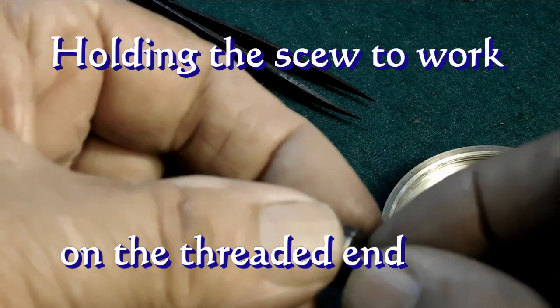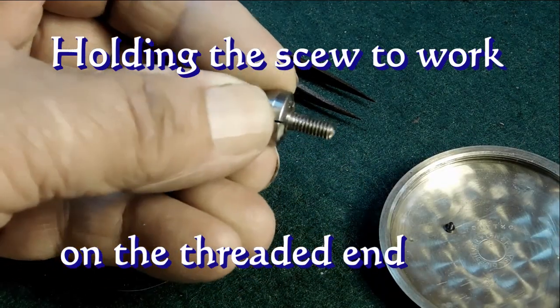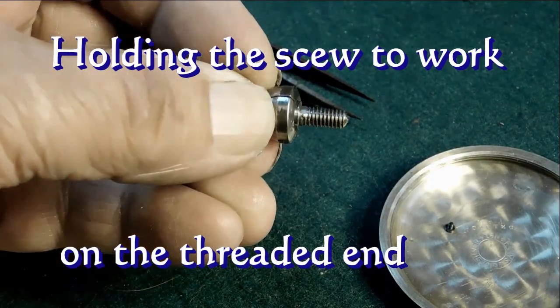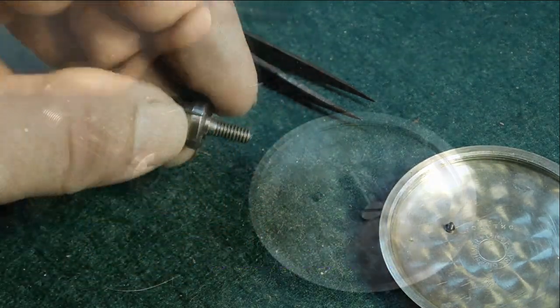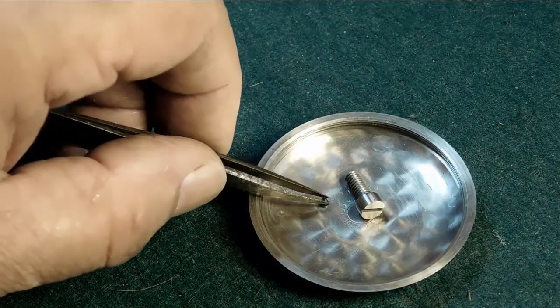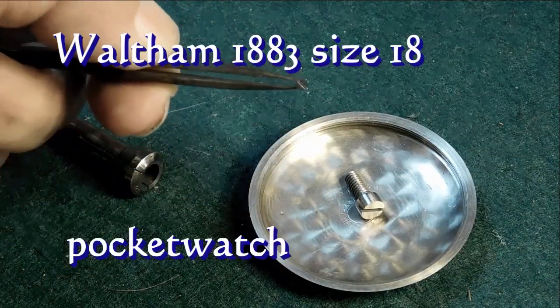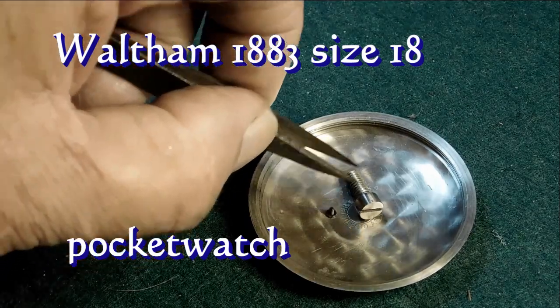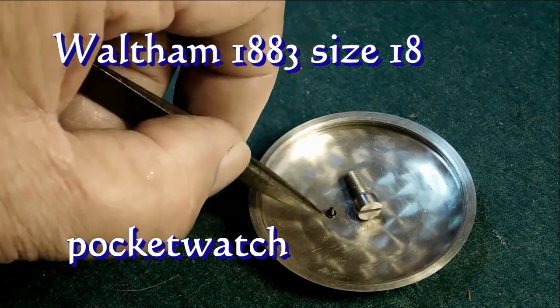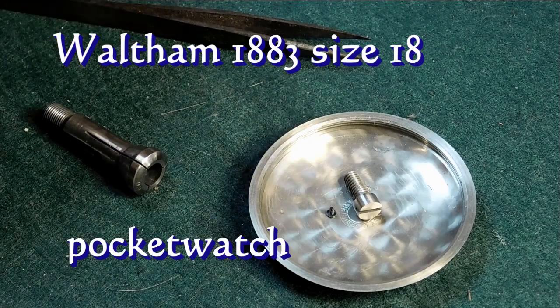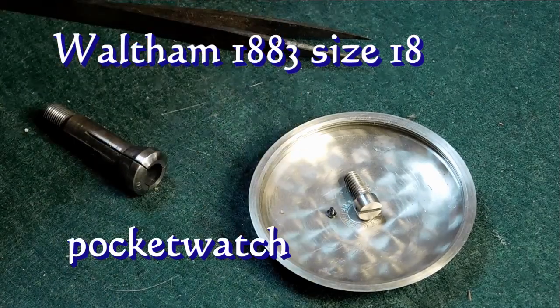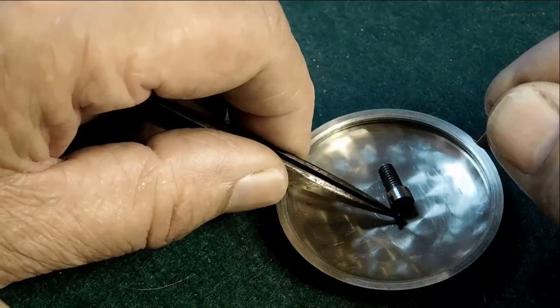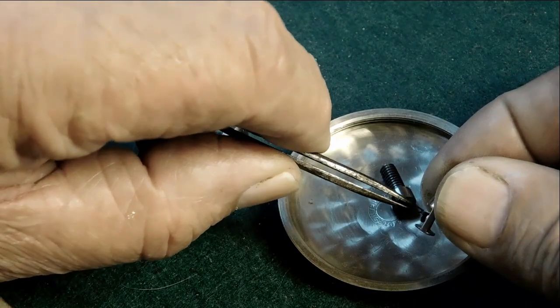First thing we're going to do is work on the threads. We'll put it in the collet, now we'll be able to work on the threads. But before we do anything with the threads, let's take a look at that little screw there—that's from a Waltham 1883 size 18 pocket watch. That's the normal type of size of screw that you'd be working on with this equipment, and the one I'm working on is for a skeleton clock, quite a bit bigger than what normally gets used in this equipment.